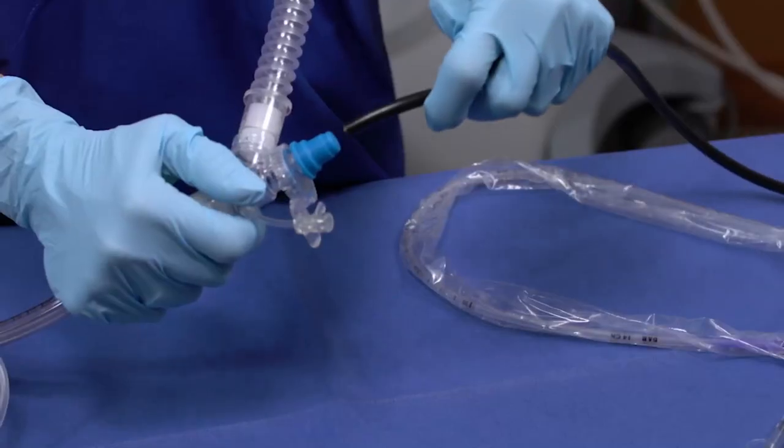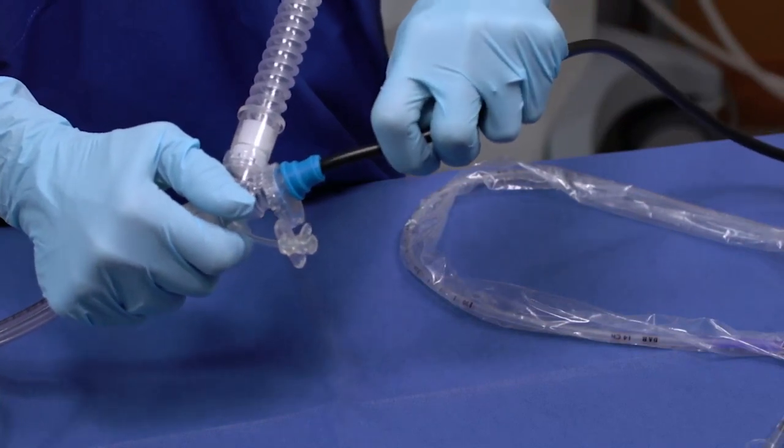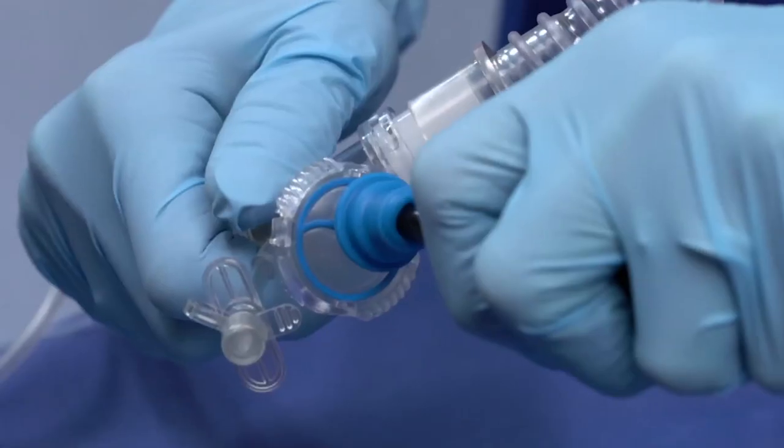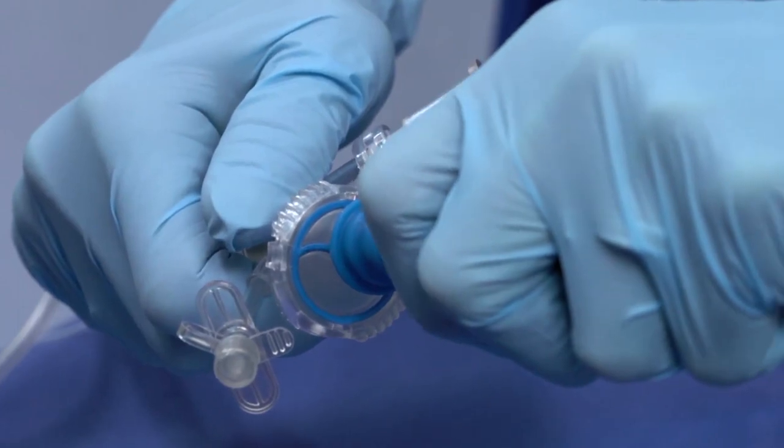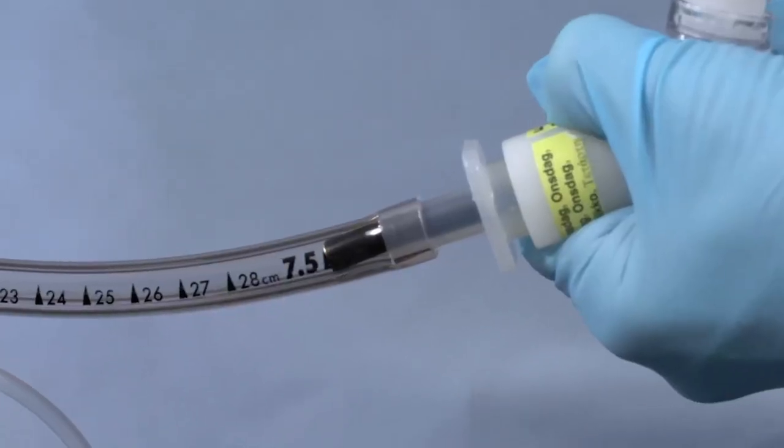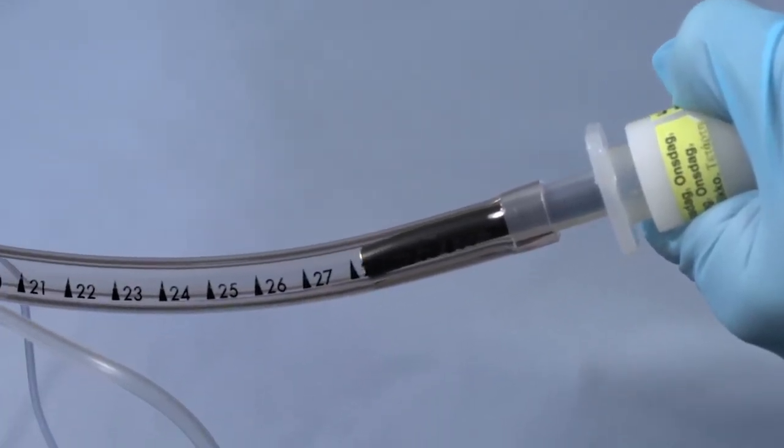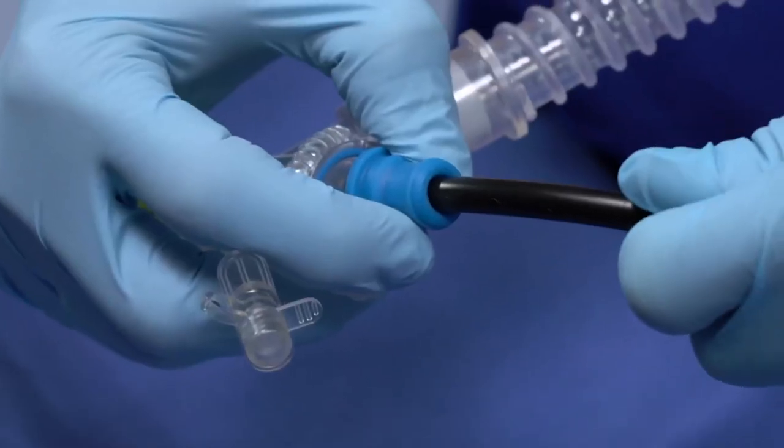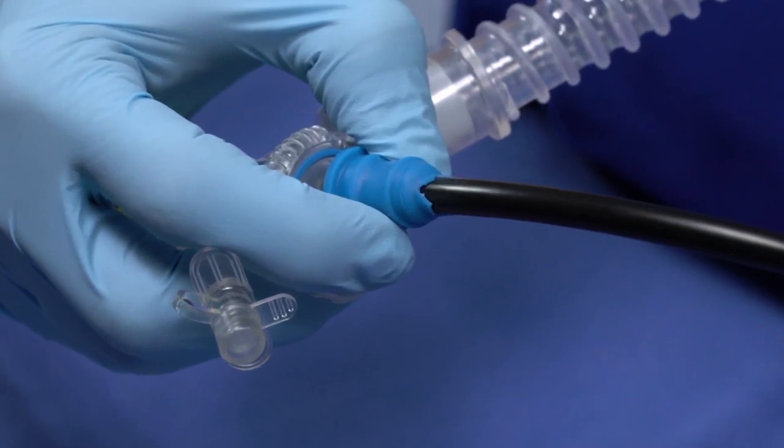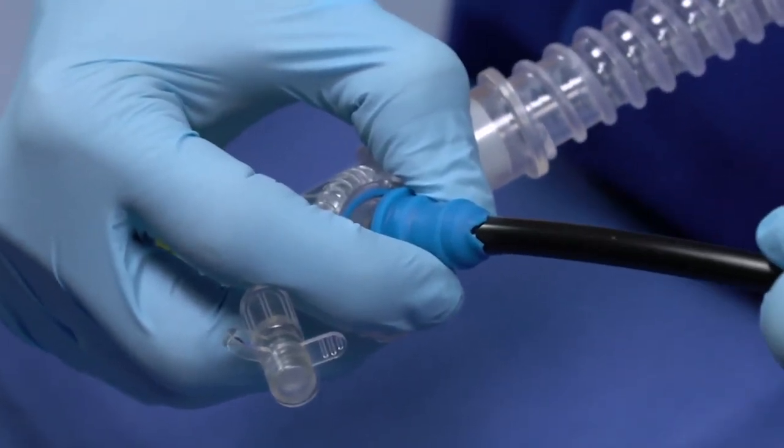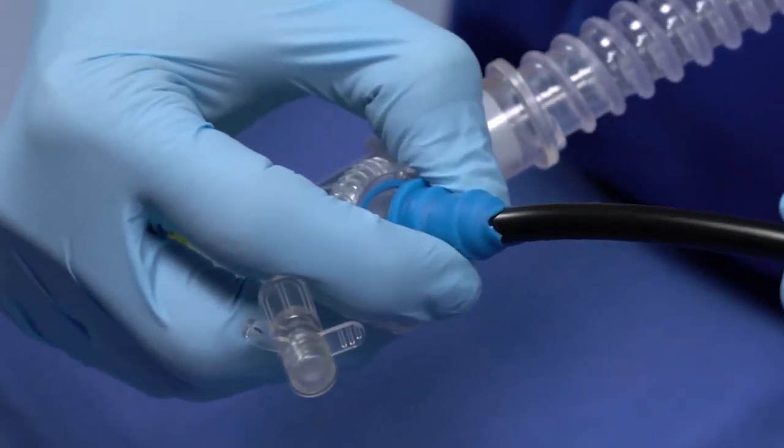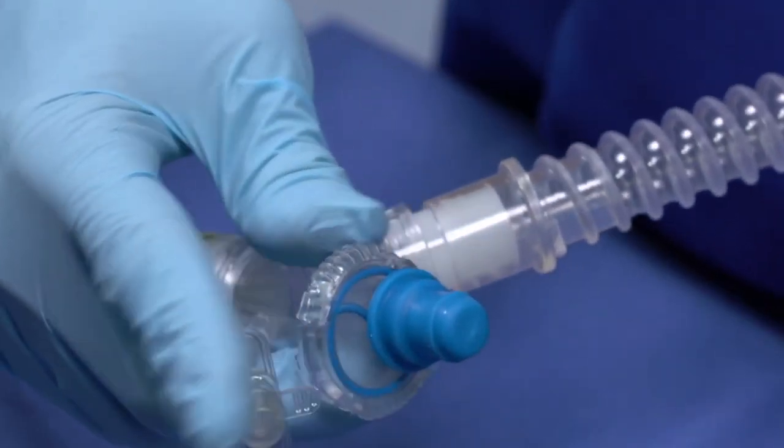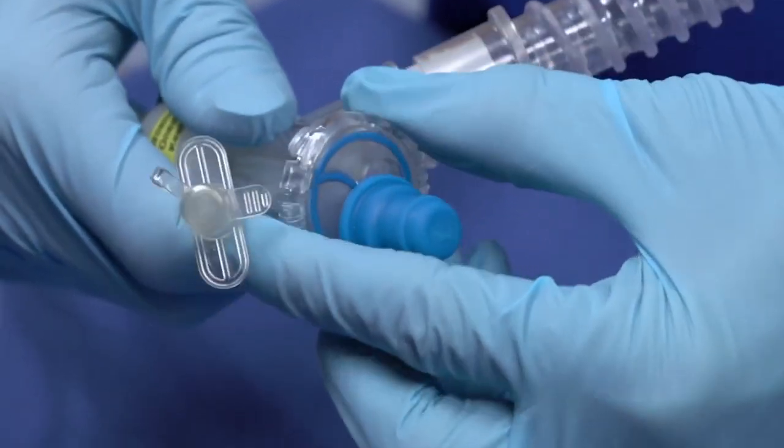Turn the patient access valve to the open position and introduce the bronchoscope through the self-sealing cap. This allows direct passage through the patient access valve into the endotracheal tube or tracheostomy tube and directly to the lungs. When withdrawing the bronchoscope, hold the cap in place to avoid disconnection and to ensure a perfect seal. Turn the access valve to the closed position to completely isolate the system.